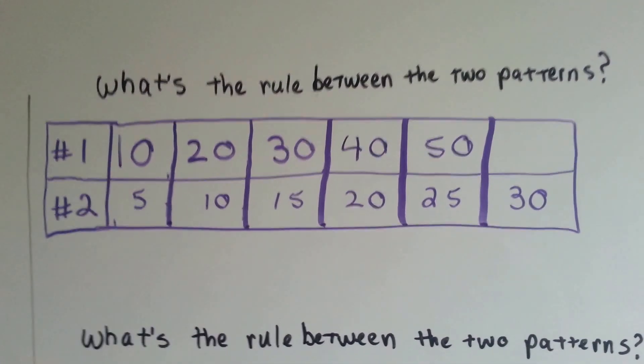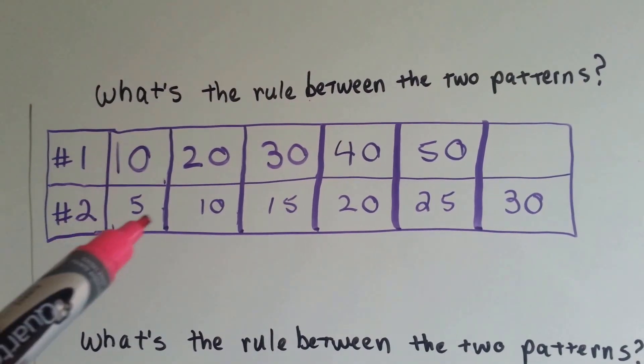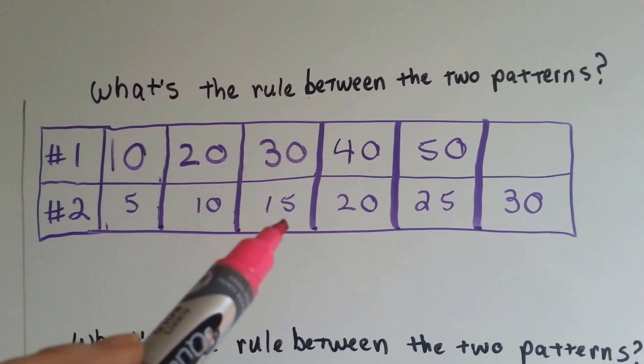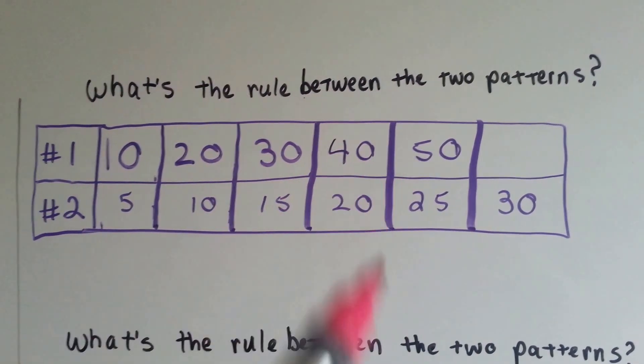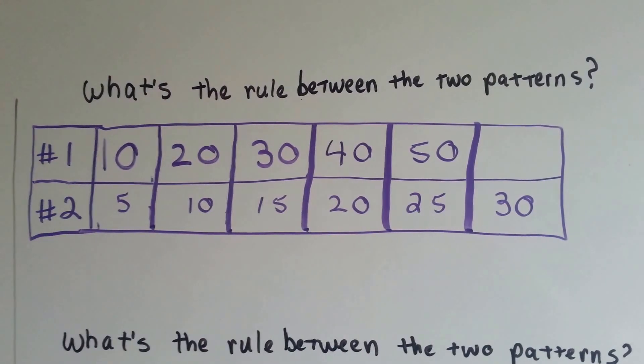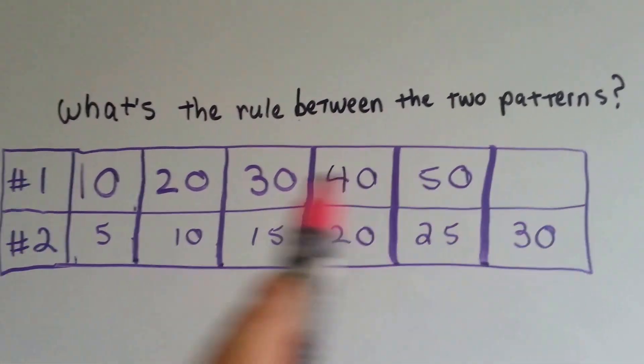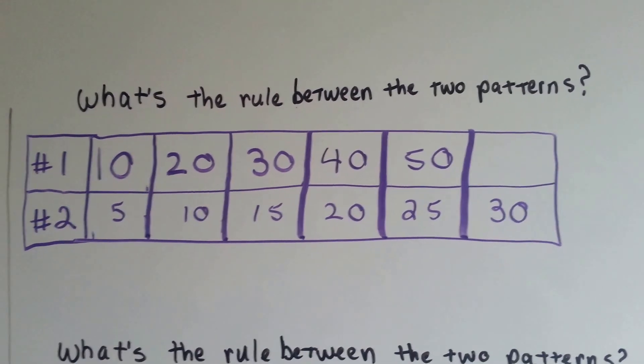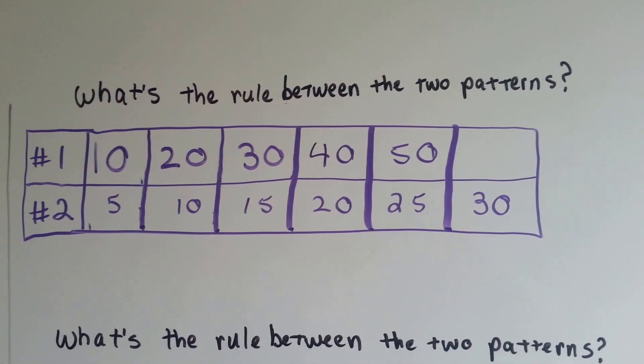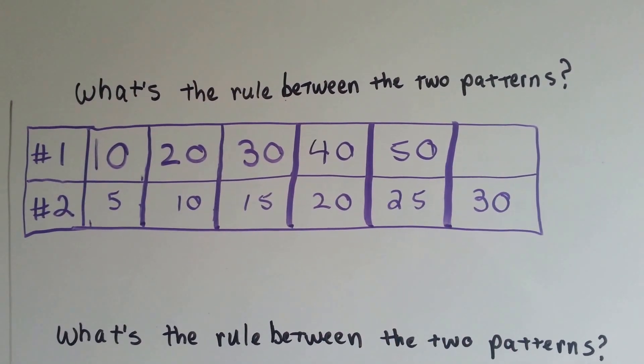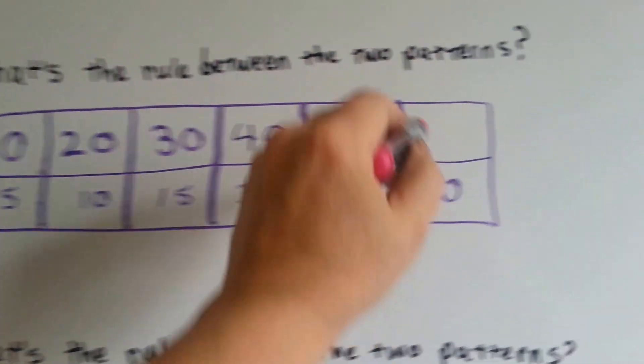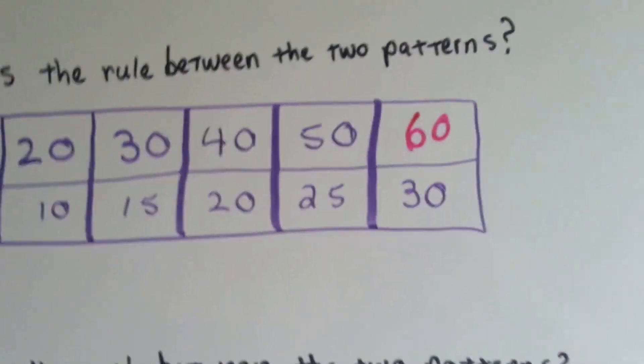What's the rule between these two patterns? Can you tell? 10 and 5, 20 and 10, 30 and 15, 40 and 20, 50 and 25. If you say the number 2 sequence is half of what the number 1 ones are, you're right. So do you know what would go there? If these are half? And these are going up by tens, aren't they? So if you said 60, you're right.